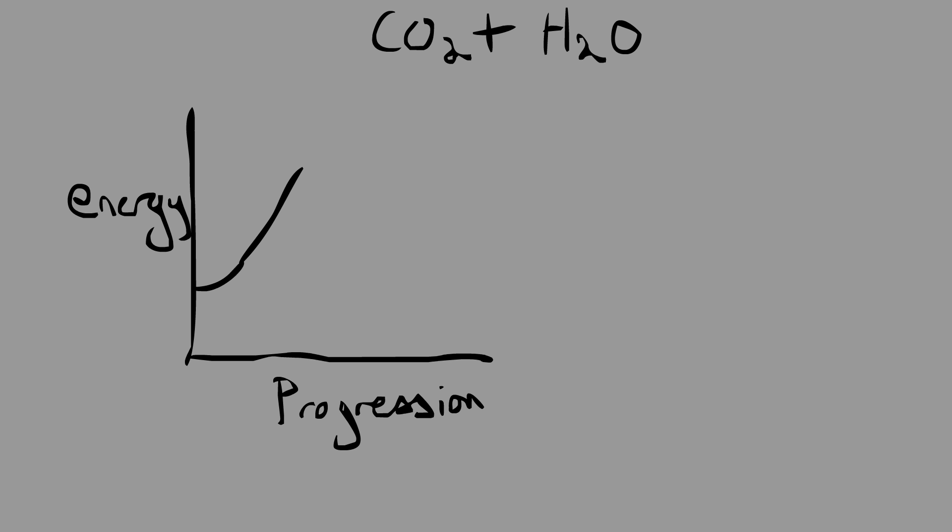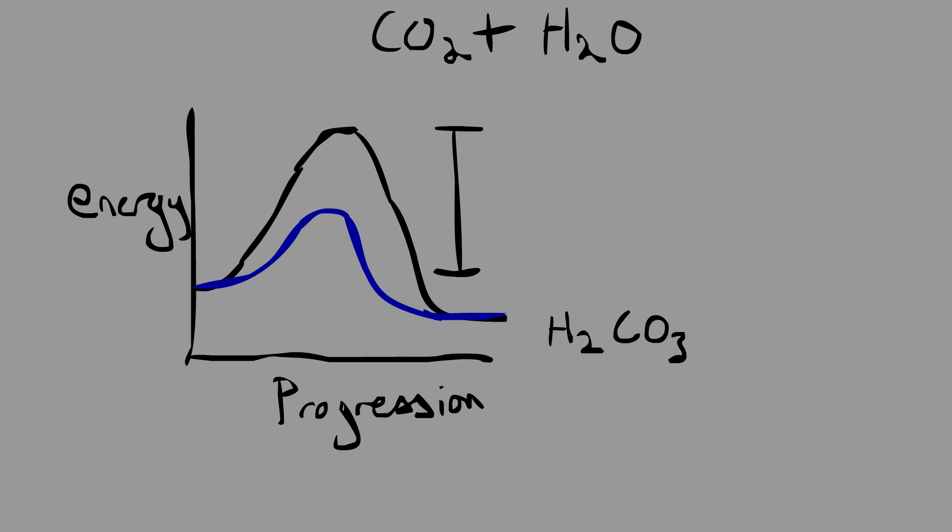Say we want CO2 and water to combine. If we follow the black line, this is the energy required without an enzyme. We can see it's quite a large amount. However, if we were to look at the energy required with an enzyme, the energy is far reduced. This is what enzymes do. They reduce the amount of energy required to perform a certain reaction.